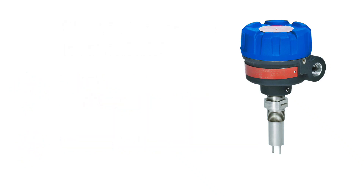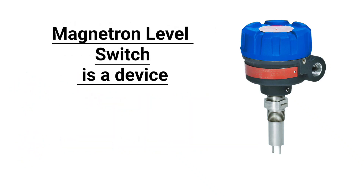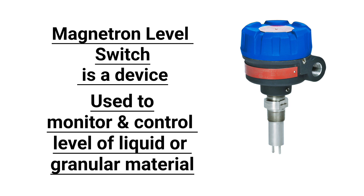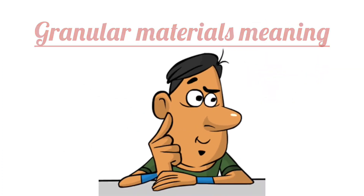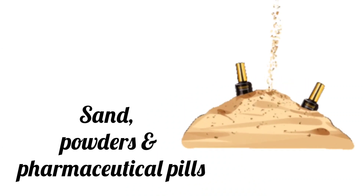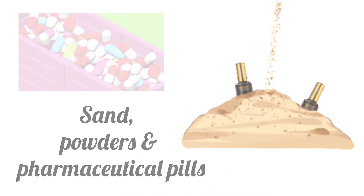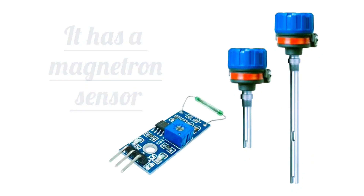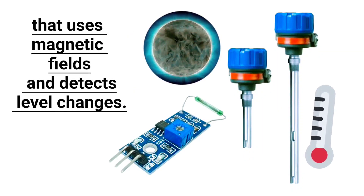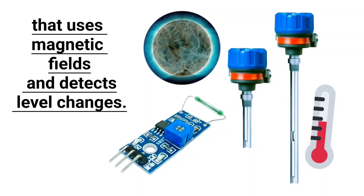Friends, magnetron level switch is a device which is used to monitor and control the level of liquid or granular material. Granular materials meaning such as sand, powders, and pharmaceutical pills. It has a magnetron sensor that uses magnetic fields and detects level changes.